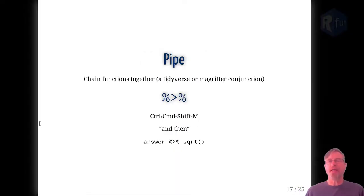Similarly, the question that I get a lot is, what is a pipe? Well, a pipe is a way to chain together multiple functions into a longer sentence, if you will. And therefore, the pipe becomes a conjunction. You can think of it as saying, and then. You can make the pipe appear on your keyboard by typing control shift M, if you're on a Windows machine, or command shift M if you're on a Mac.